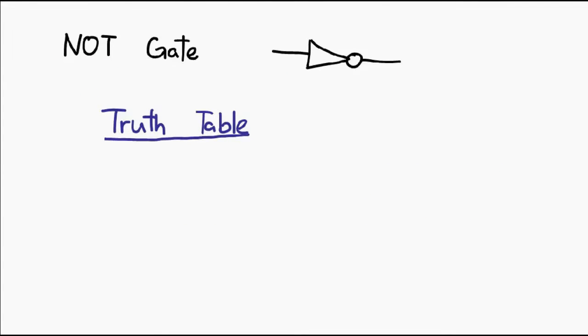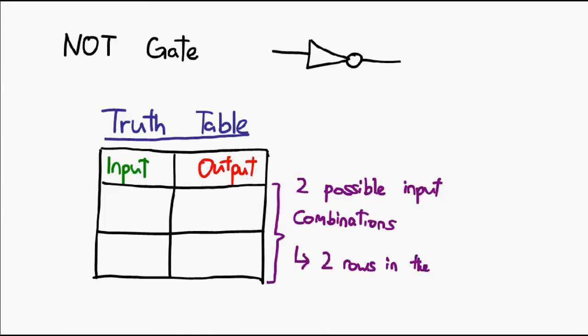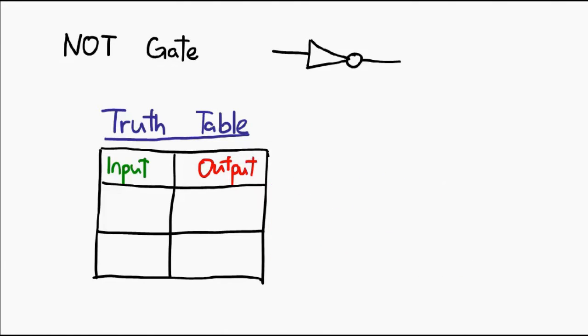So what does the truth table look like? The first thing we want to consider is how many inputs are there. Well, since the gate itself only takes one input, there are only two possible inputs this gate can receive: 0 or 1. So when given 0, what is the output? Well, it's 1, because it's an inversion. Given 1, obviously the output is 0. Therefore, the truth table looks like this. Your NOT gate simply inverts the input, whilst your truth table simply lists out all the input and output pairs.